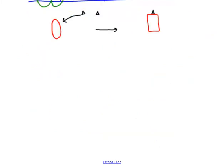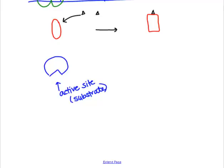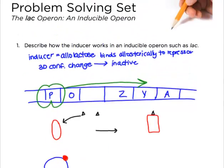To draw it out - the normal enzyme has an active site where it normally binds substrate, and allosteric binding would be if another molecule came over and bound at a different location. That's allosteric binding, and that's in a nutshell how the inducer works in this lac operon.